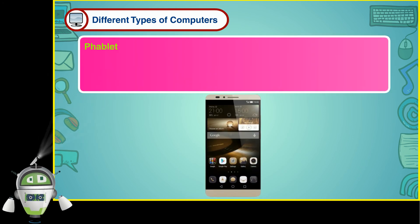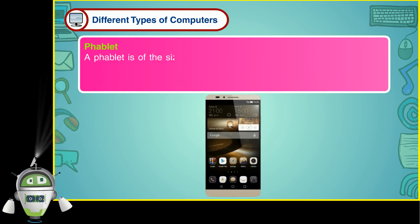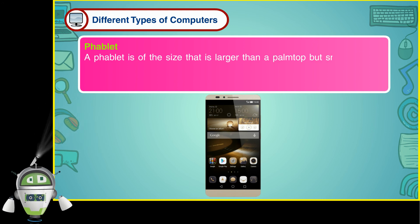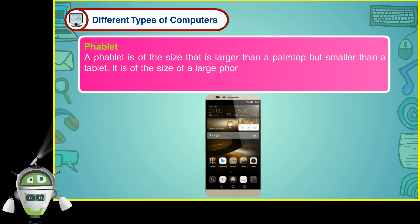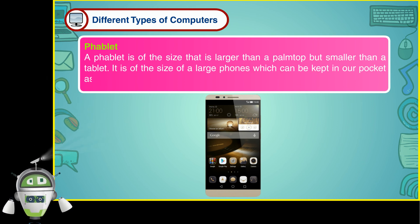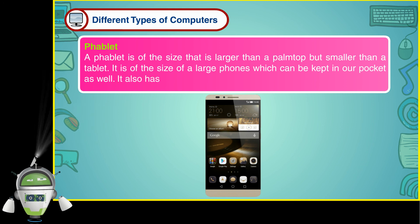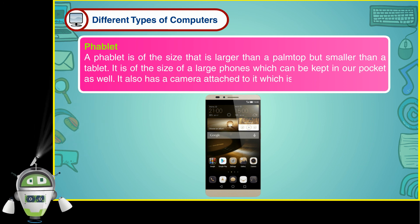A phablet is of a size that is larger than a palm top but smaller than a tablet. It is the size of a large phone which can be kept in our pocket as well. It also has a camera attached to it which is used to click pictures.